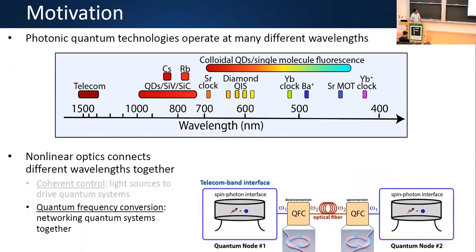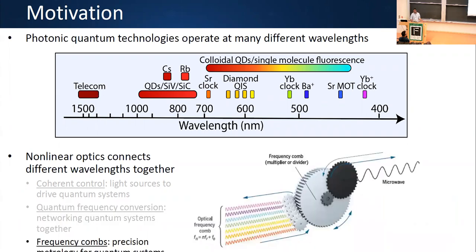We're also interested in scenarios where we can physically link different quantum technologies together in a network. Here we want access to so-called quantum frequency conversion — being able to manipulate the color of quantum states of light, ideally manipulating the bandwidth or temporal profile of quantum states of light. We're also interested in developing precision metrological tools like optical frequency combs, which are used for precision metrology, synchronization, and time transfer in networks.